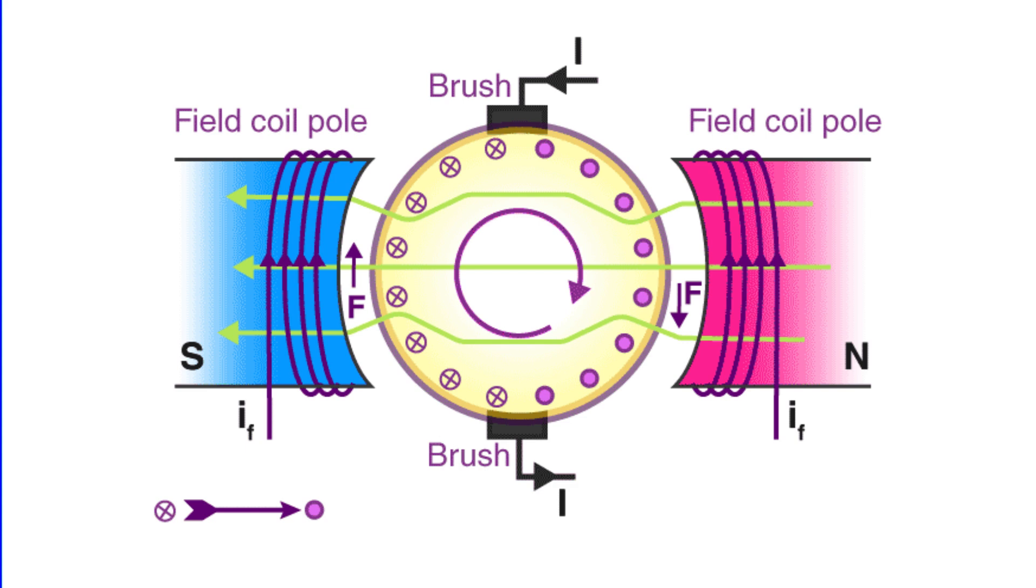This occurs because commutation is restricted to coils under the brushes and these coils switch between magnetic poles during operation. This leads to a swift change in current direction from plus I to minus I or vice versa, inducing a high reactance voltage. This high voltage manifests as heat and sparking, which can damage the brushes and commutator segments.